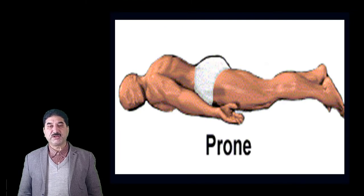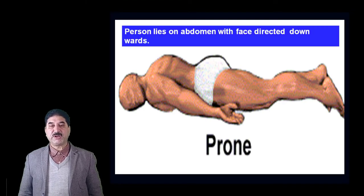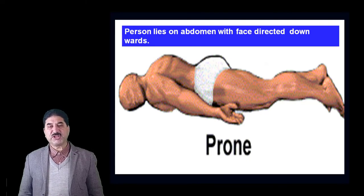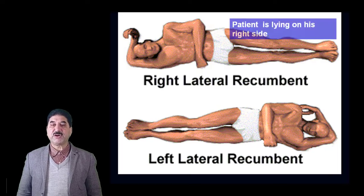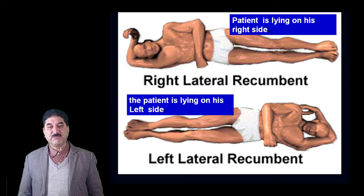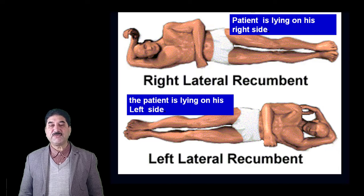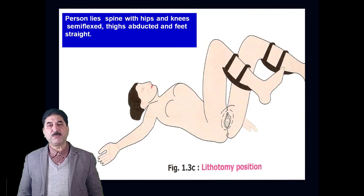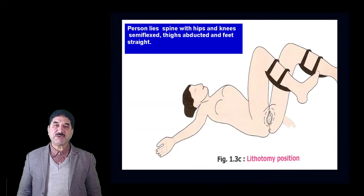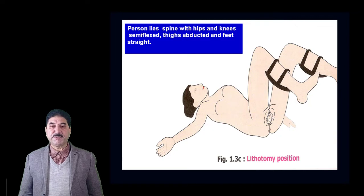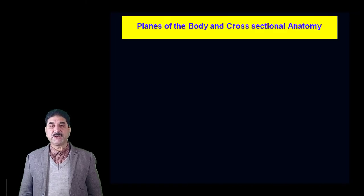The opposite of supine is prone position, where the person lies on the abdomen with face directed downwards. Other positions include right lateral recumbent position, when the patient is lying on the right side, and left lateral recumbent position, when the patient is lying on the left side. Lithotomy position, commonly used in gynecology, is when the person lies with hips and knees semi-flexed, thighs abducted and feet straight.